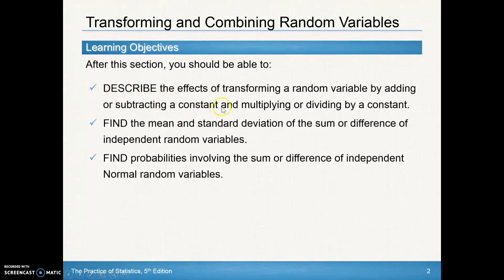The first part is to describe the effects of transforming a random variable by adding or subtracting a constant, and multiplying or dividing by a constant. This is a review from Chapter 2.